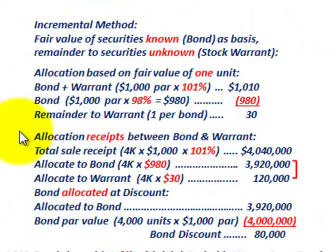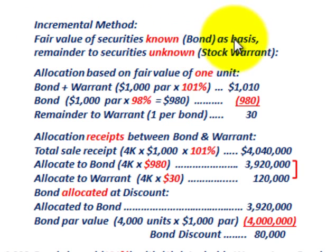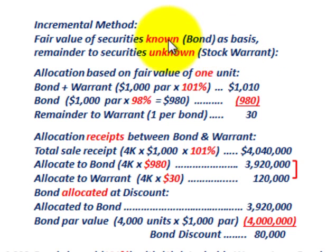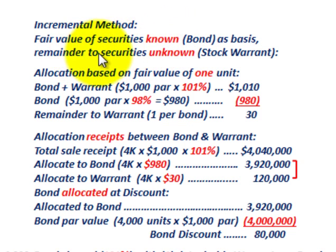The incremental method is pretty basic. We have the fair value of the known security — in this case, the bond — and that's our basis. The unknown security, in this case the stock warrant, is allocated the difference between the total amount received for the bond plus the warrant sold together, versus what we know the bond value is. The remainder of that difference goes to the stock warrant.